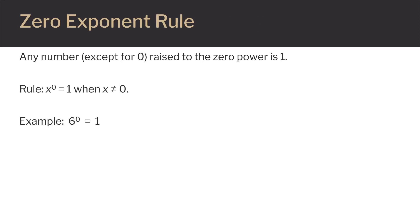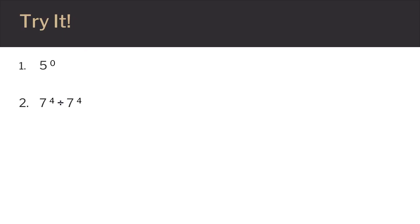Our last rule is actually the easiest. The zero exponent rule says that any number except zero raised to the zero power is equal to one. An example would be six to the zero power — because we are raising it to the zero power, this equals one. Here's our last set of practice problems. Pause the video, give these a try, and then hit play to go over the solutions.